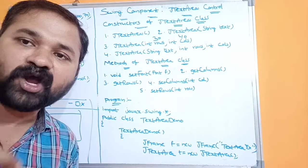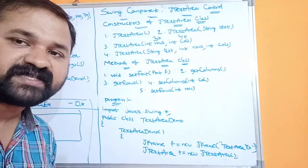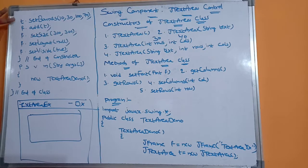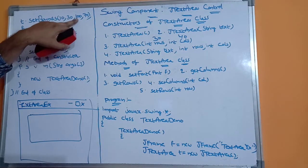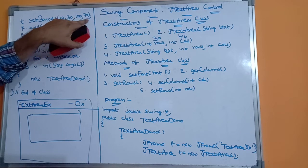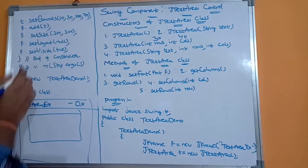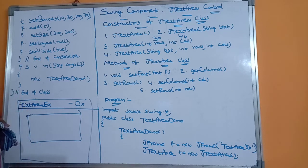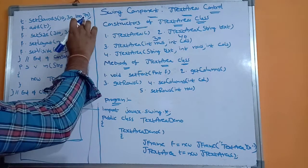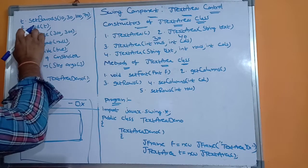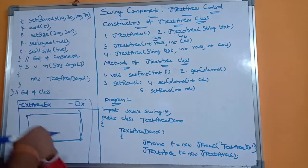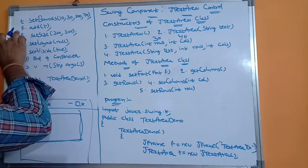Once the text area control is created, we need to add it to the frame. For that we use setBounds(): t.setBounds(10, 30, 100, 70) — where 10 is the x-coordinate, 30 is the y-coordinate, 100 is the width, and 70 is the height. Then we add the text area control to the frame using: f.add(t).